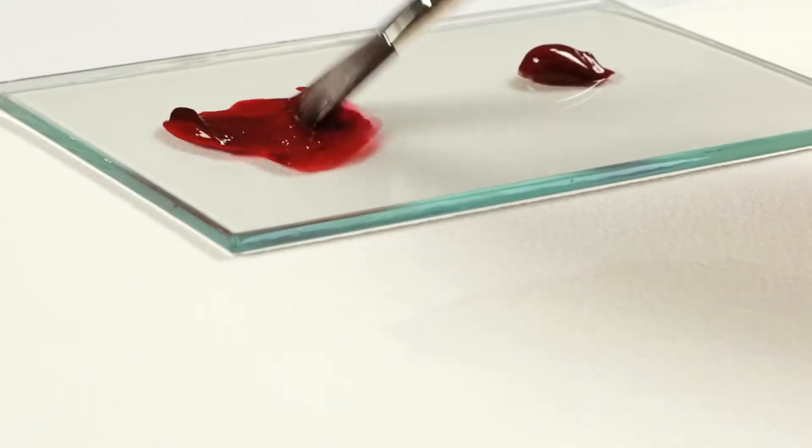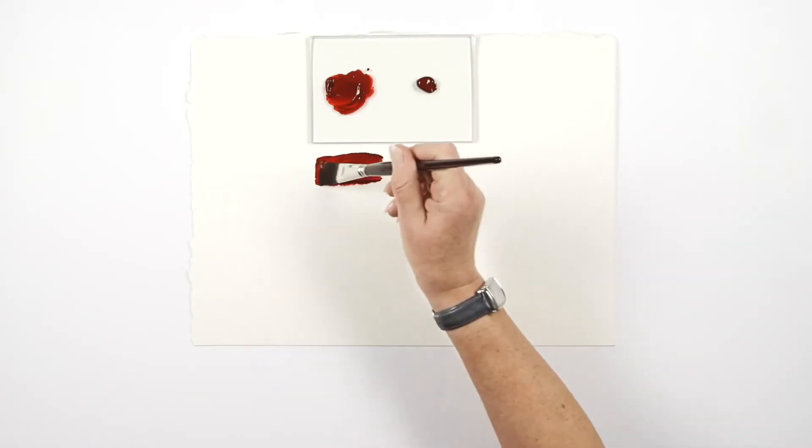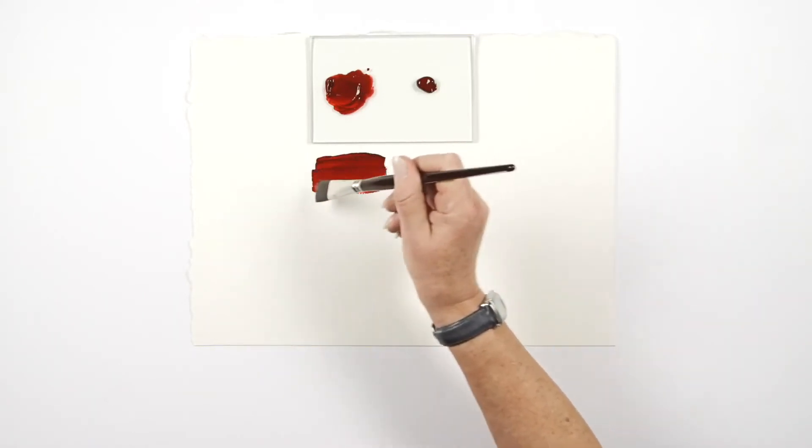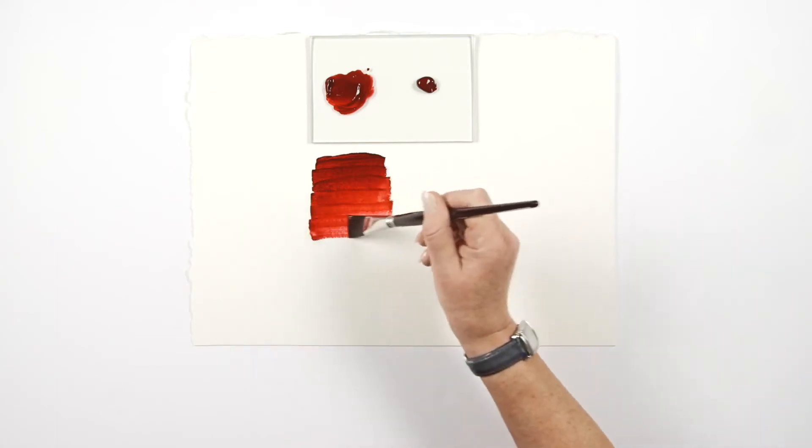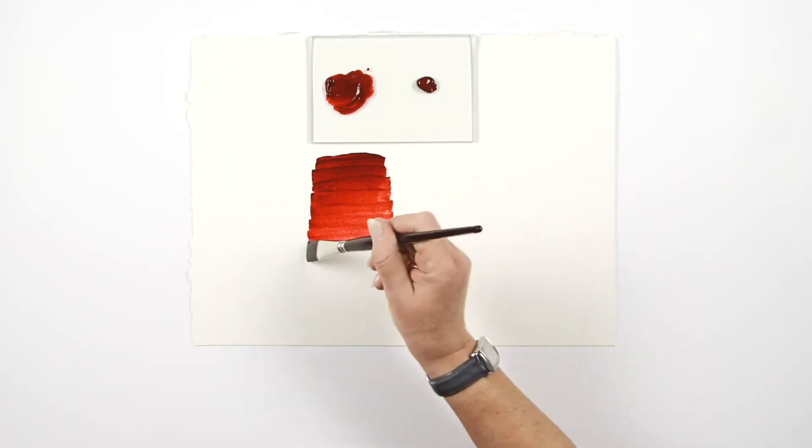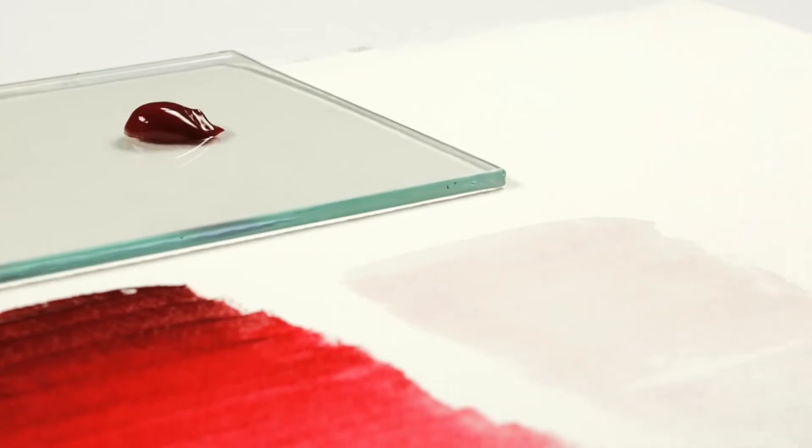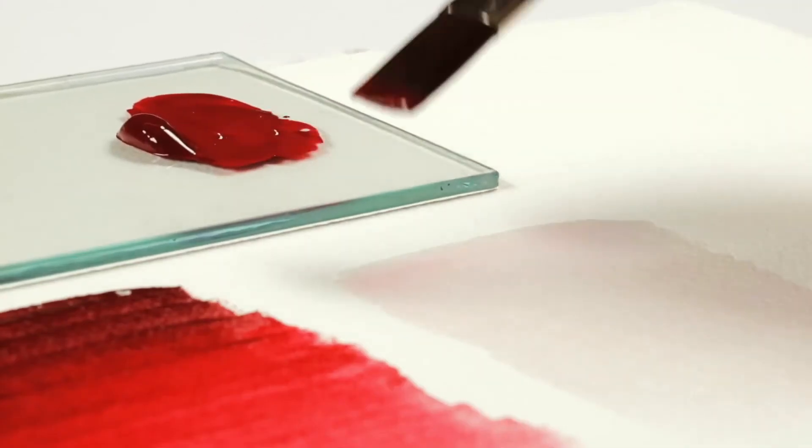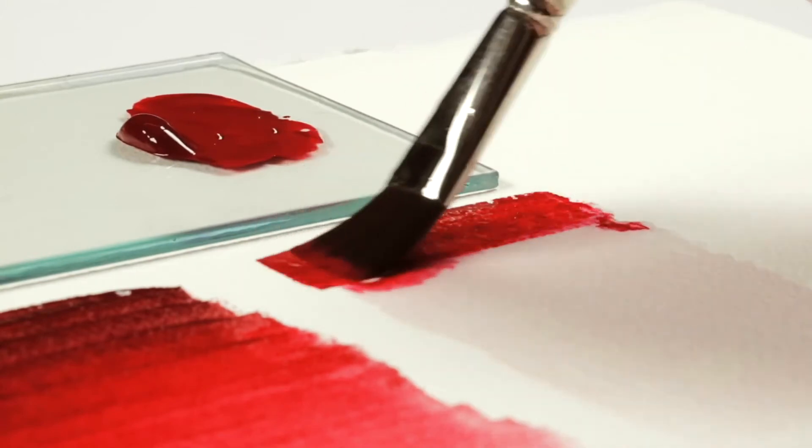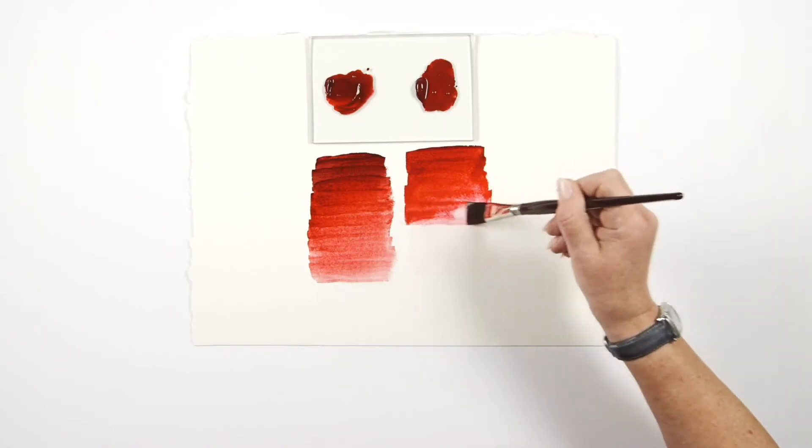As the name suggests these colors are both alizarin crimsons. This is the original alizarin crimson pigment and this is a synthetic version which is a blend of pigments to reproduce the alizarin crimson color. However as I'm about to prove the lightfastness of these colors is somewhat different.